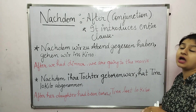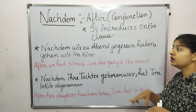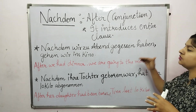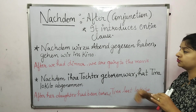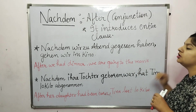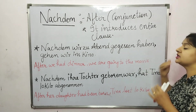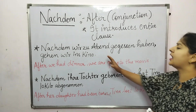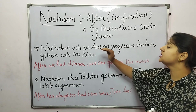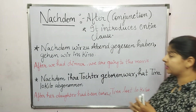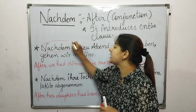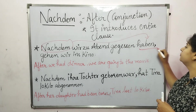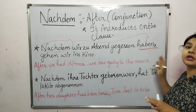For example: 'Nachdem wir gegessen haben, gehen wir ins Kino.' After we have dinner, we are going to the movies. We can see that in the first sentence, because of the conjunction nachdem, our verb is now placed at the end.